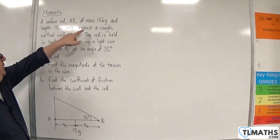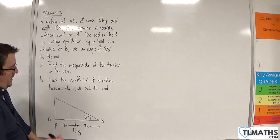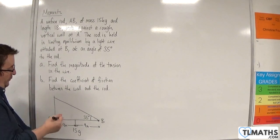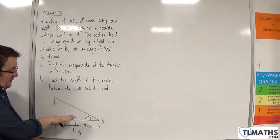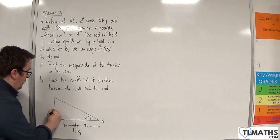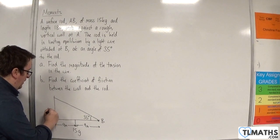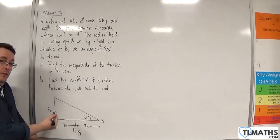It rests against a rough vertical wall. If the wall is rough, that means it's trying to slip down the wall. So there will be a frictional force working against that direction of motion, working upwards.